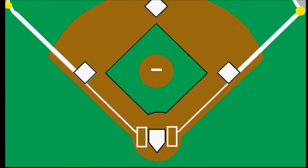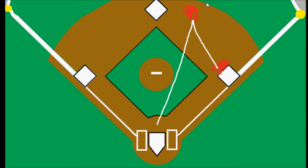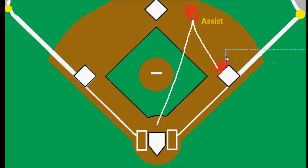Let's look at a simple example. If we have a second baseman and a first baseman, and the batter hits a ground ball to the second baseman who throws on to the first baseman and gets the batter out — the second baseman gets credit for the assist and the first baseman gets credit for the put out.